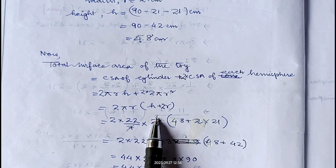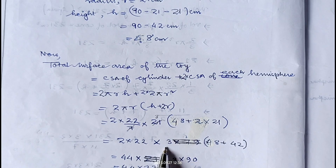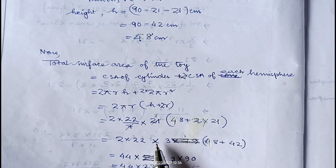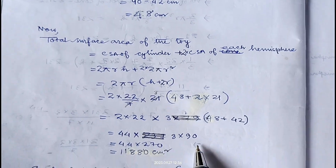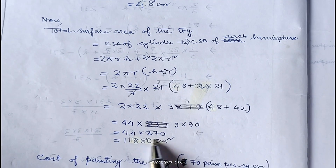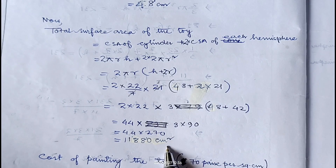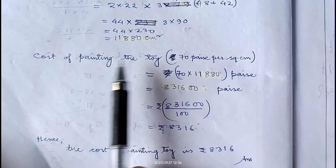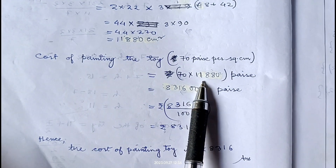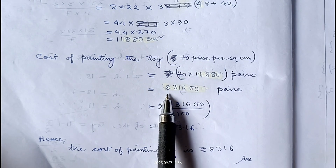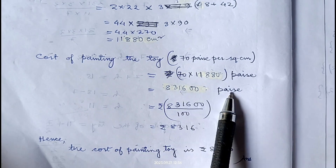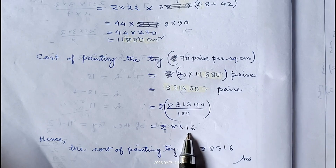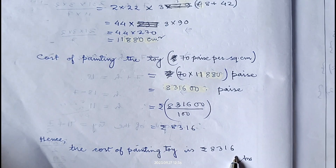Pi is 22/7, radius is 21, h is 48, and 2r is 42. Cancelling 7 and 21 gives 3, so 2 into 22 into 3 into (48 plus 42) equals 44 into 3 into 90 equals 11,880 centimeter square. Cost of painting at 70 paisa per square centimeter is 70 into 11,880 paisa equals 8,31,600 paisa, divided by 100 gives rupees 8316. Therefore cost of painting the toy is rupees 8316.